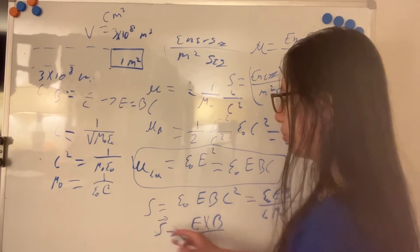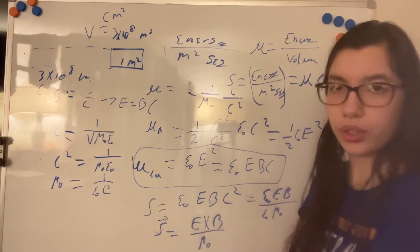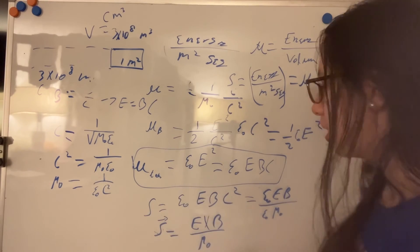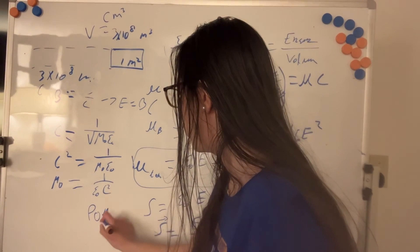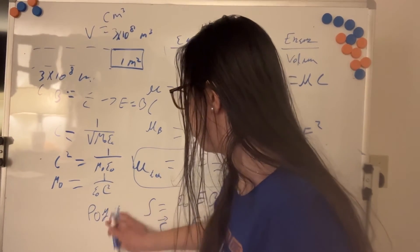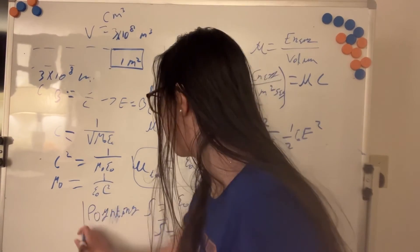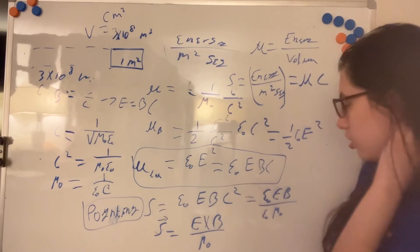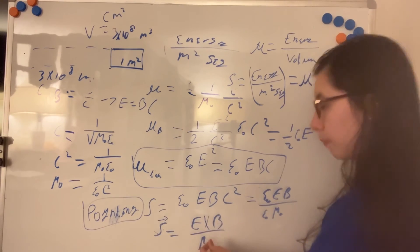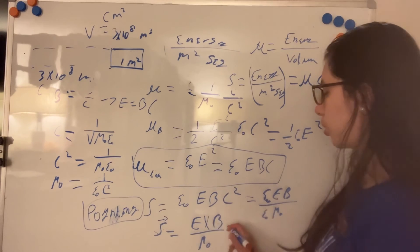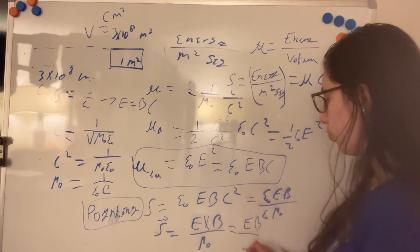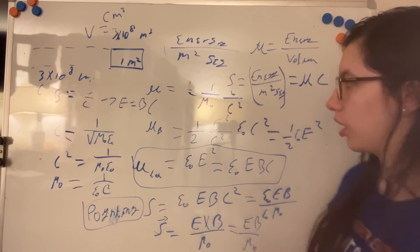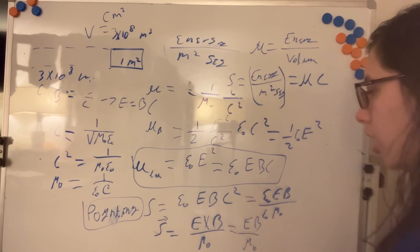We usually put a cross product here to indicate the direction of the electromagnetic radiation. So in vector notation, S — the Poynting vector — is written as E cross B divided by mu naught. Note that 'Poynting' is the name of a person, not referring to pointing at something. In an electromagnetic wave, the electric field is always perpendicular to the magnetic field, so the cross product naturally captures the direction, though it is not strictly necessary to write it in that form.